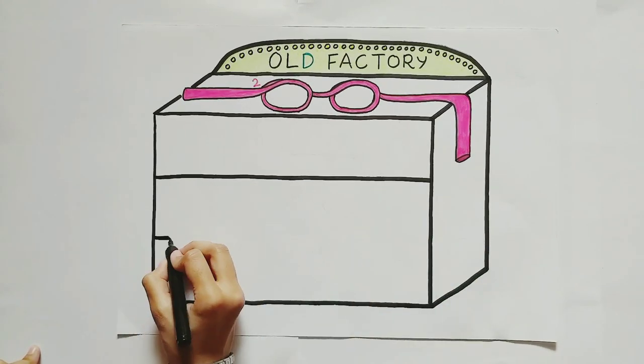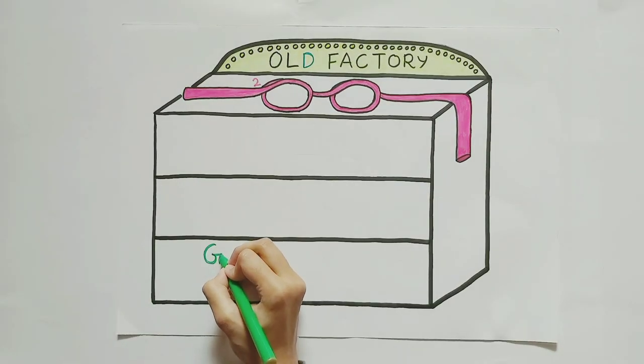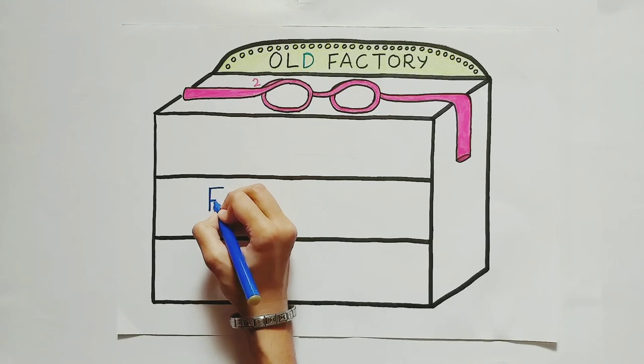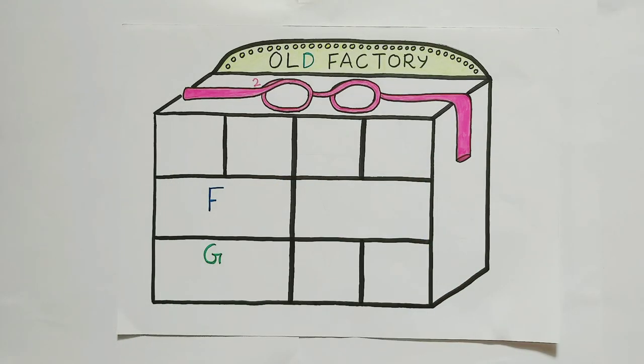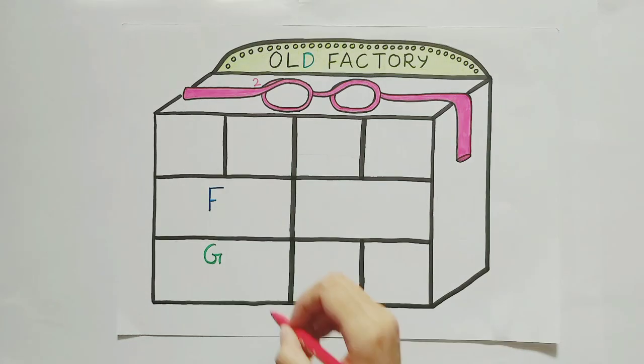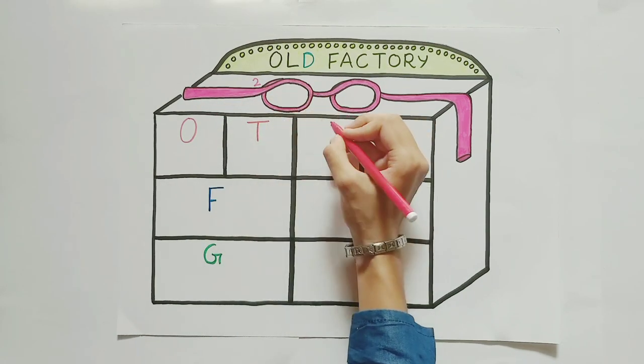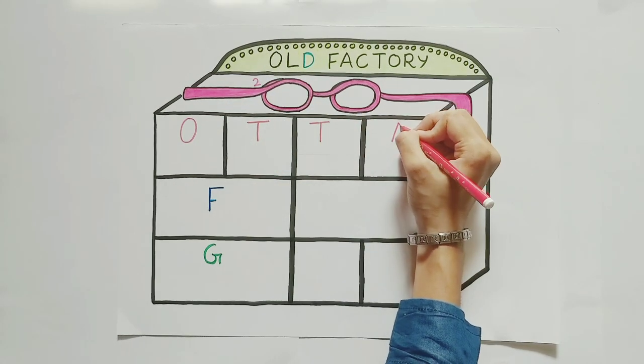Now this factory has three floors: ground floor, first floor, and the superior floor. Three floors and nine rooms. On the superior floor, we have four rooms, denoting four cranial nerves.